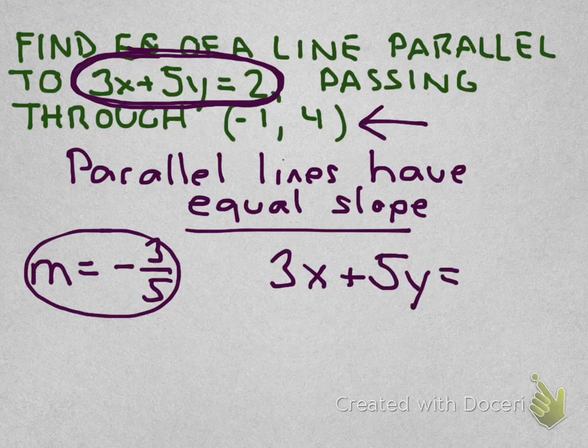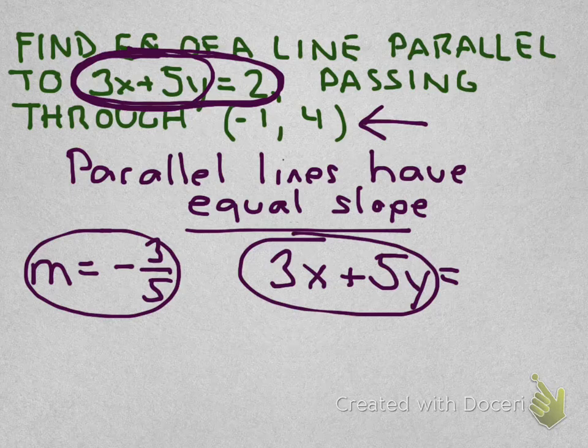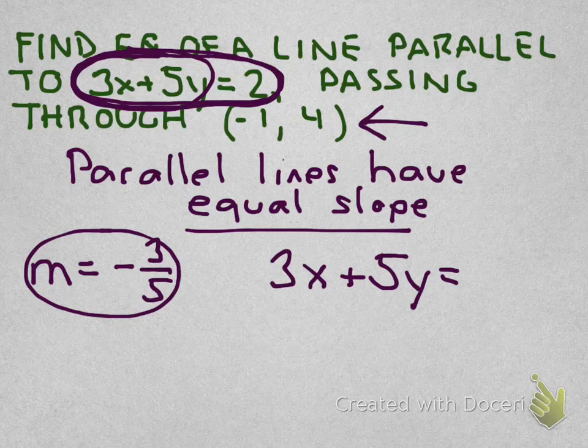The beginning part, the left-hand side of this equation in standard form and the left-hand side of this equation in standard form will be the same because that's where the A and the B are, and they are parallel lines and they have the same A and B. So if we had 3x + 5y before, we'll have 3x + 5y again. The only thing we don't know is we don't know what C is.